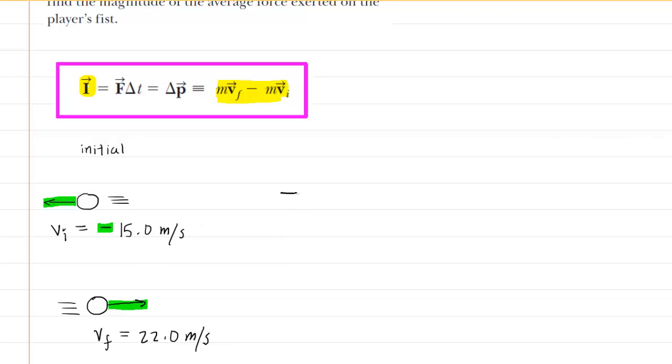Now that we've got it, we'll go ahead and calculate the impulse. The impulse equals the mass, which was 0.28 kilograms, multiplied by the final velocity of positive 22 meters per second, minus the mass again,